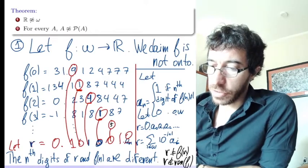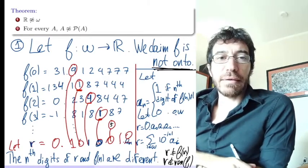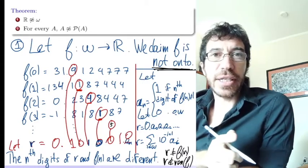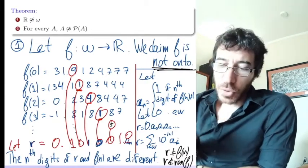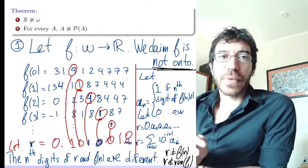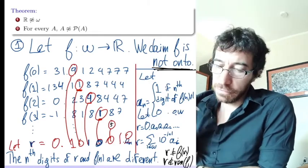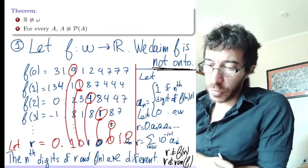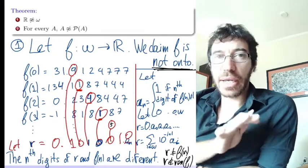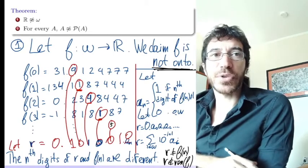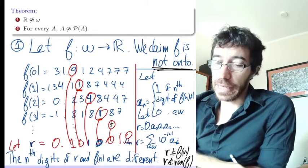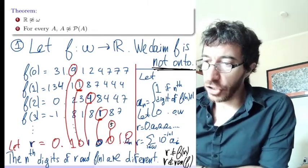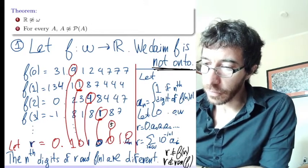That proves our claim that F is not onto. We can never have an onto function — we just found one number not in the range, but there are infinitely many more. We could have diagonalized in many other ways. No matter what function you choose from ω to the reals, it can never be onto. That's how they have different sizes. Now let's do the proof of the second part.